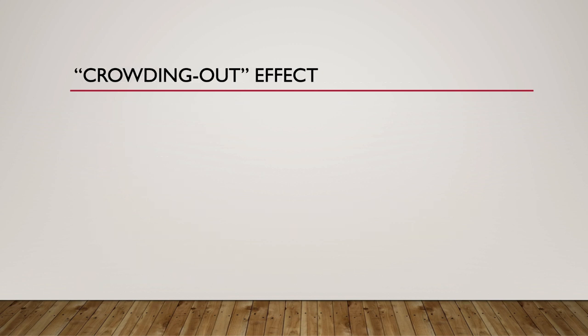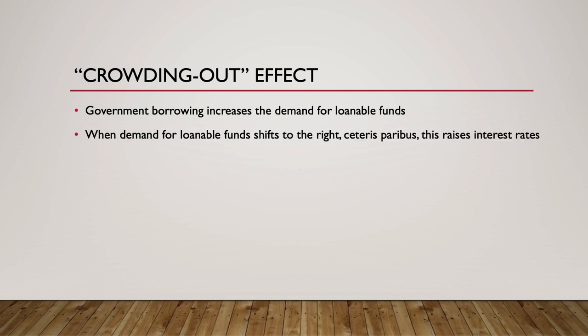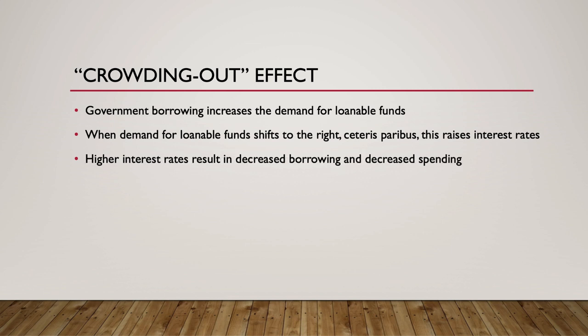Is there a limit to the effects that increased government spending can have on the economy? The answer is yes. One such limit is known as the crowding out effect. When the government borrows money to fund deficit spending, the demand for loanable funds increases. When this occurs, interest rates rise in the economy. When interest rates rise, this results in lower levels of consumer spending by households and lower levels of investment spending by firms because the cost of borrowing is now higher. Thus, when considering aggregate demand — recall that AD equals C plus I plus G plus NX — it is possible for the increase in G to be partially or completely crowded out by a reduction in C and I.